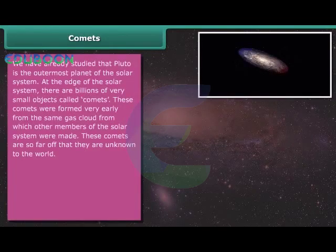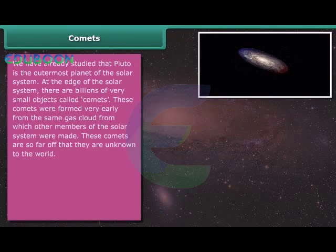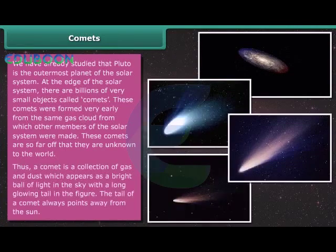We have already studied that Pluto is the outermost planet of the solar system. At the edge of the solar system, there are billions of very small objects called comets. These comets were formed very early from the same gas cloud from which other members of the solar system were made. These comets are so far off that they are unknown to the world. Thus, a comet is a collection of gas and dust which appears as a bright ball of light in the sky with a long glowing tail in the figure. The tail of a comet always points away from the sun.